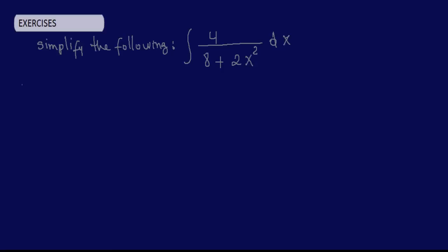So basically we are given an integral here. 4 over 8 plus 2 x squared d of x. So what we want to do here is we see a 4, 8, 2. So automatically what we want to do is simplify, factor out 4 and 8 here to basically factor it out.